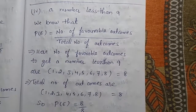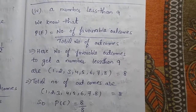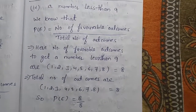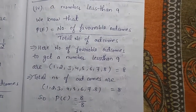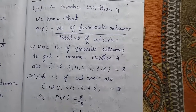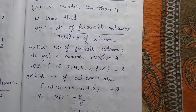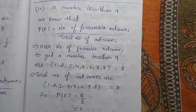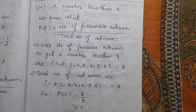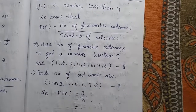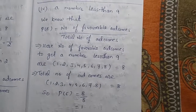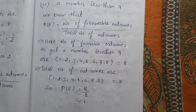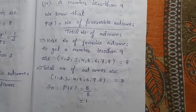Next question: a number less than 9. Probability is number of favorable outcomes by total number of outcomes. The favorable outcomes to get a number less than 9 are 1, 2, 3, 4, 5, 6, 7, 8. So the number of favorable outcomes are 8 and total number of outcomes are 8. The probability is 8 by 8, that is 1.